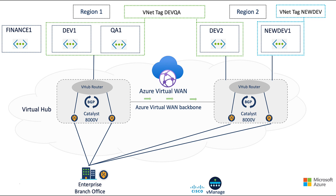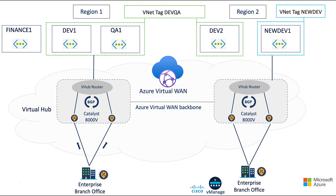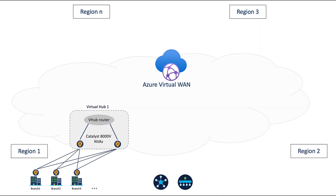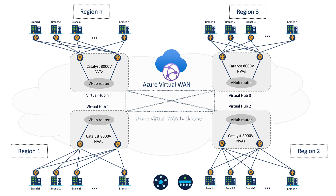Our customer may prefer that some applications ingress and egress the cloud at the point of presence closest to the branch and ride the Azure Virtual WAN backbone across regions, whereas other applications should ingress and egress the cloud at the point of presence closest to the workload. We can also create centralized policies to allow branch-to-branch communication across regions using the Azure Virtual WAN backbone. We can scale this to thousands of branches across dozens of Azure regions, all globally connected using the Azure Virtual WAN backbone.